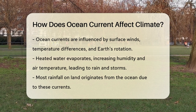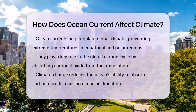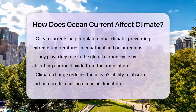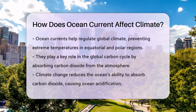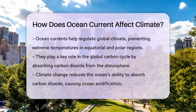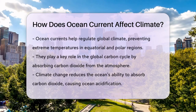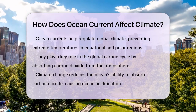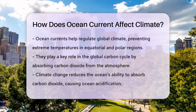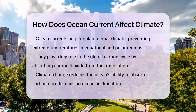Ocean currents also play a critical role in regulating global climate by counteracting the uneven distribution of solar radiation. Without these currents, the equatorial regions would be extremely hot, and the polar regions would be frigid, making much of the Earth's land uninhabitable.